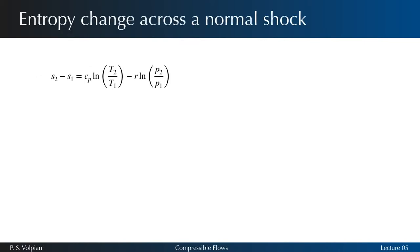Now let's talk about the entropy change across a normal shock. We saw in the first lecture that the change in entropy can be written as a function of static pressure and temperature ratios considering two different states.